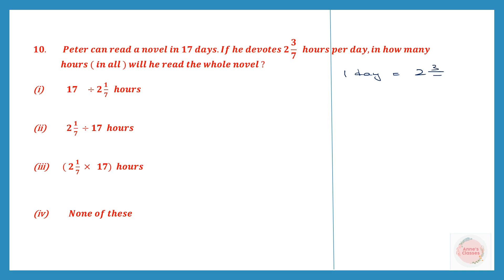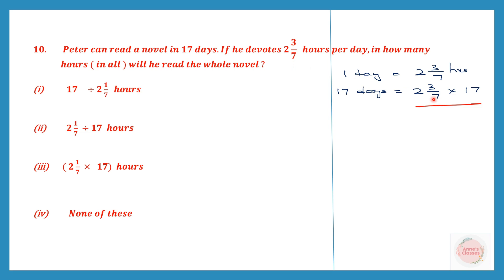In one day he spends 2 3/7 hours reading the novel. In 17 days, we multiply: 2 3/7 into 17. Looking at the options, option 3 shows 2 1/7 into 17, but the question says 2 3/7, not 2 1/7. So none of the other options are correct, and option 4 is the correct answer.